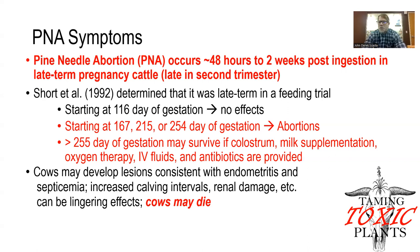This is primarily an issue of those growing calves that can be aborted, but cows may also develop lingering issues. This includes lesions consistent with endometritis, increased calving intervals — delayed breed-back — renal damage, and in some cases, mature cows may die. So it can also be a problem in those adult female animals.